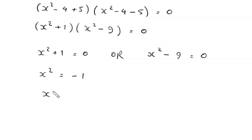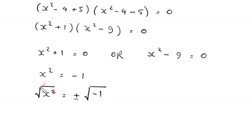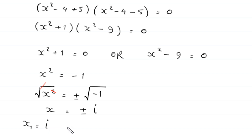Taking the square root of both sides of x² = -1, the square cancels with the square root, giving x = ±√(-1). Since √(-1) = i, we get two values: x₁ = i and x₂ = -i.